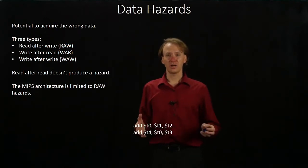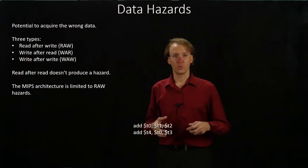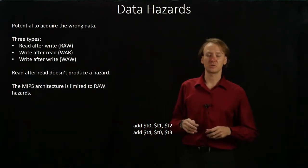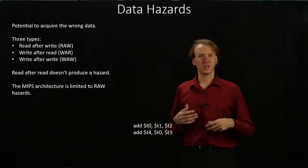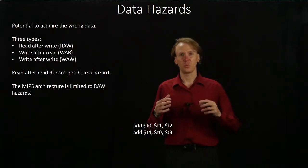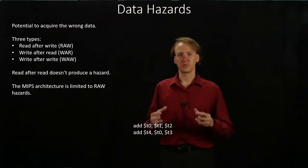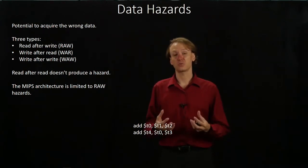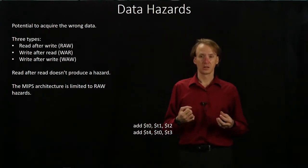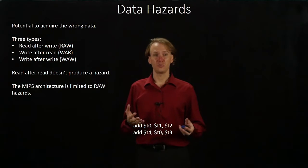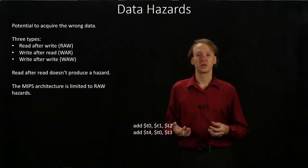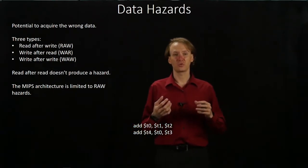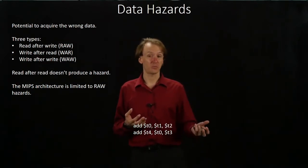A read-after-write hazard occurs when one instruction tries to read something that the previous instruction had just written. In our single-cycle architecture, we didn't have any problems there because one instruction had to complete before a second one could start. In our multi-cycle pipeline, one instruction could start and try to read from a register before the previous one had written its results to a register or to memory.